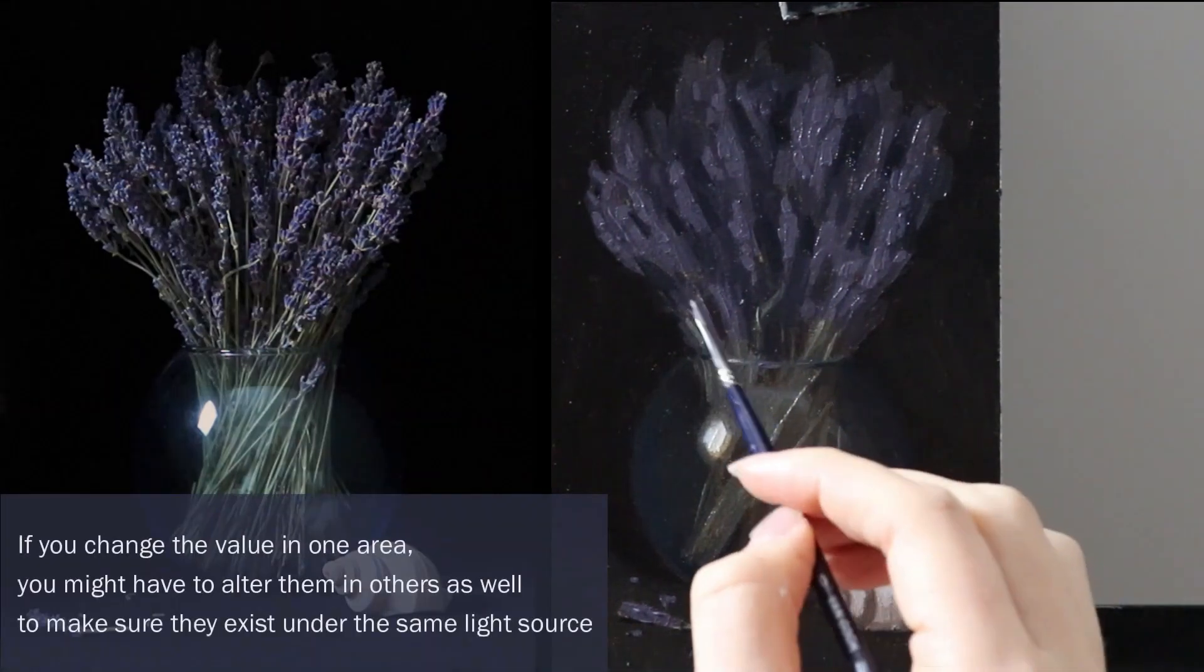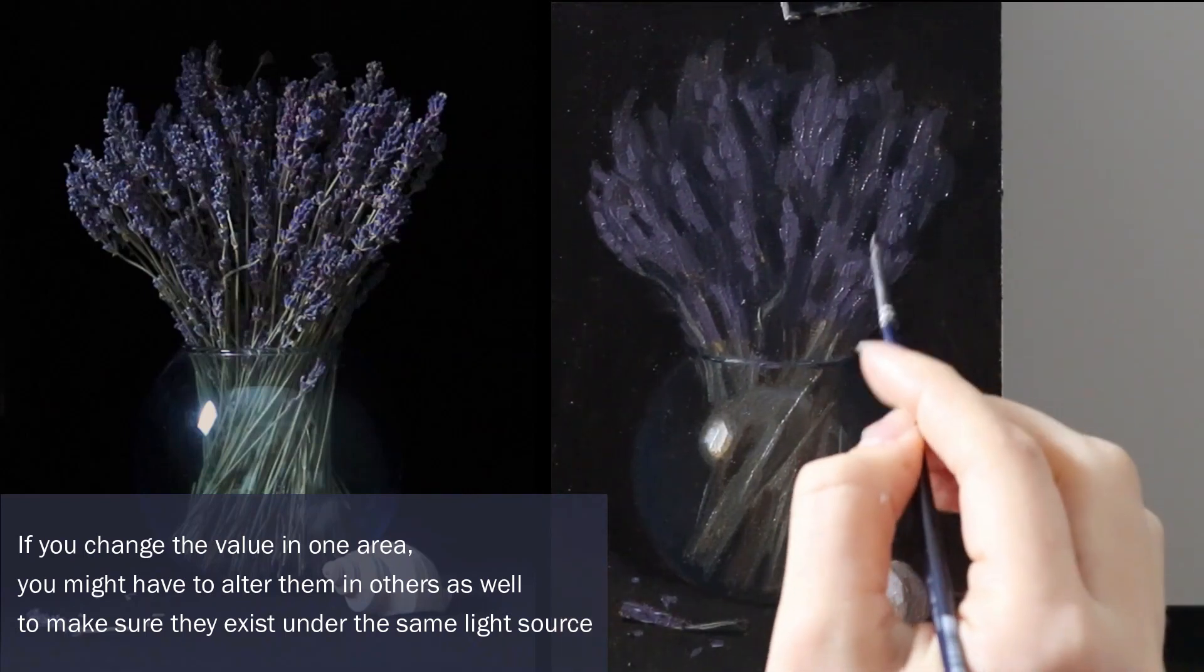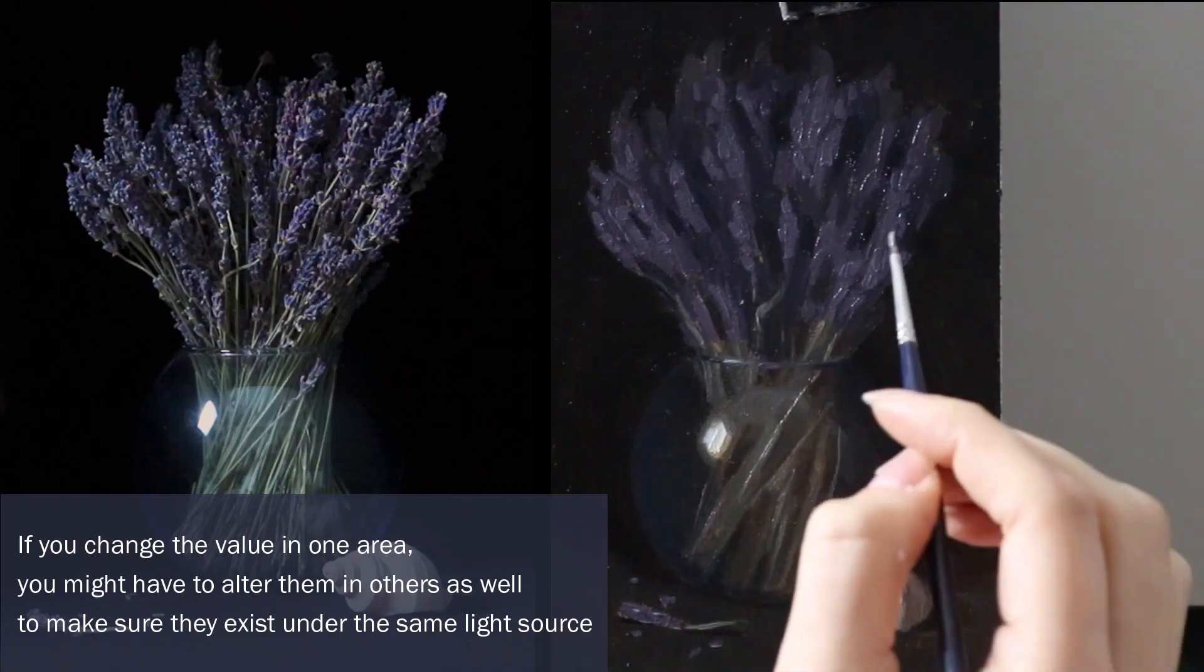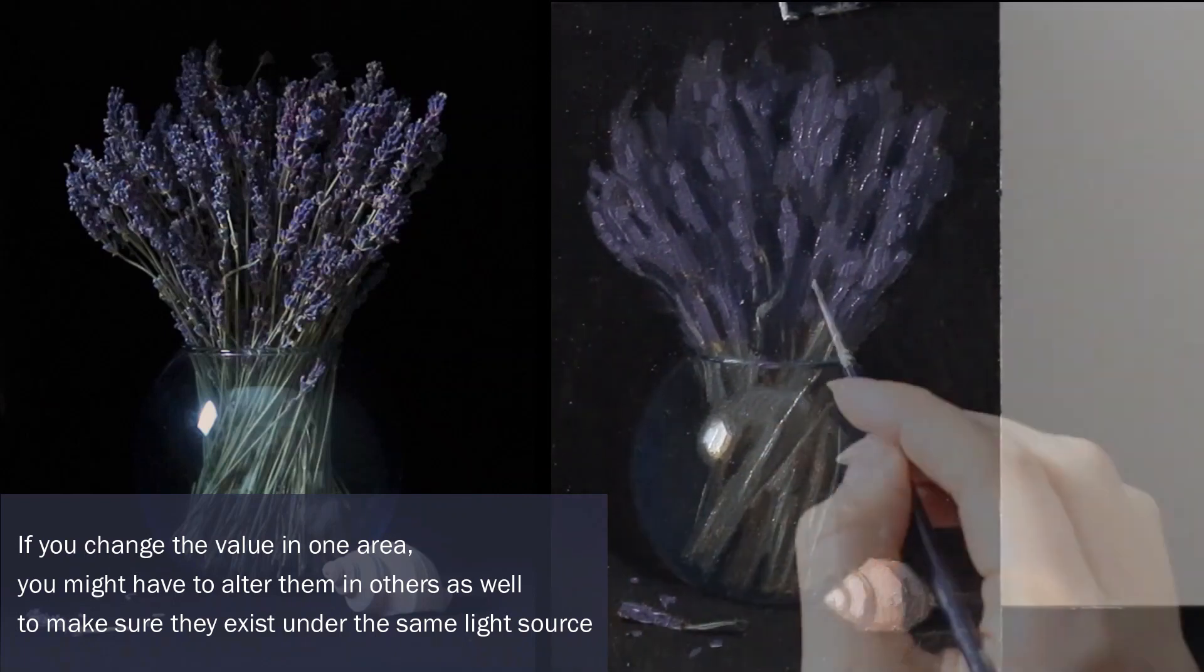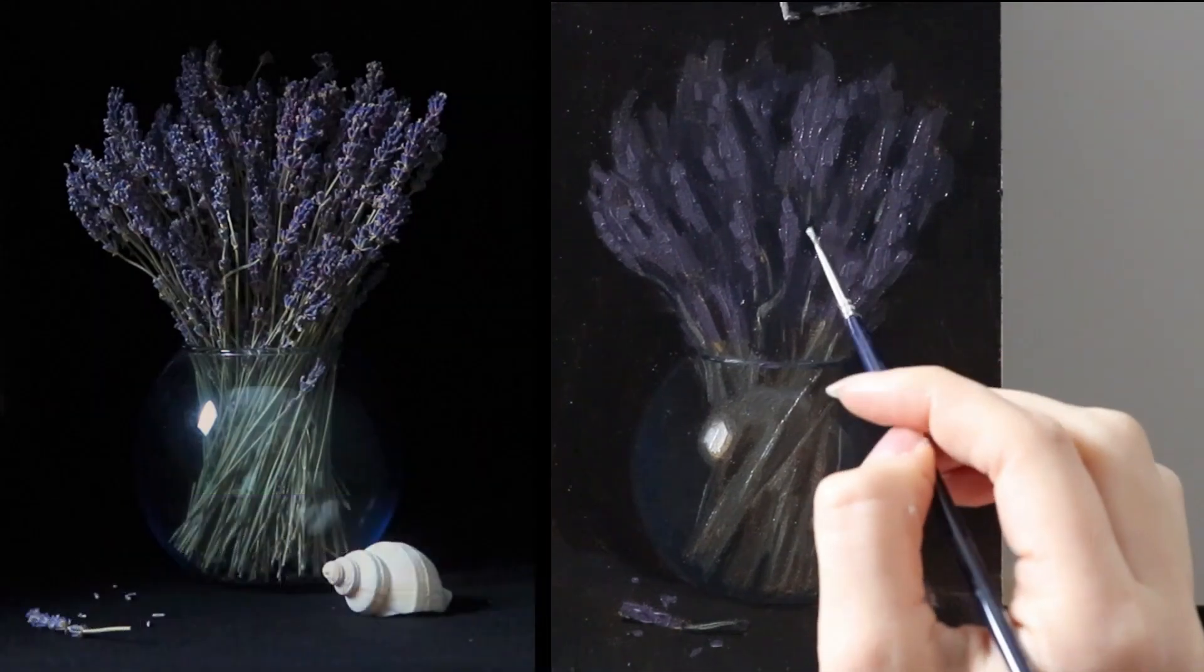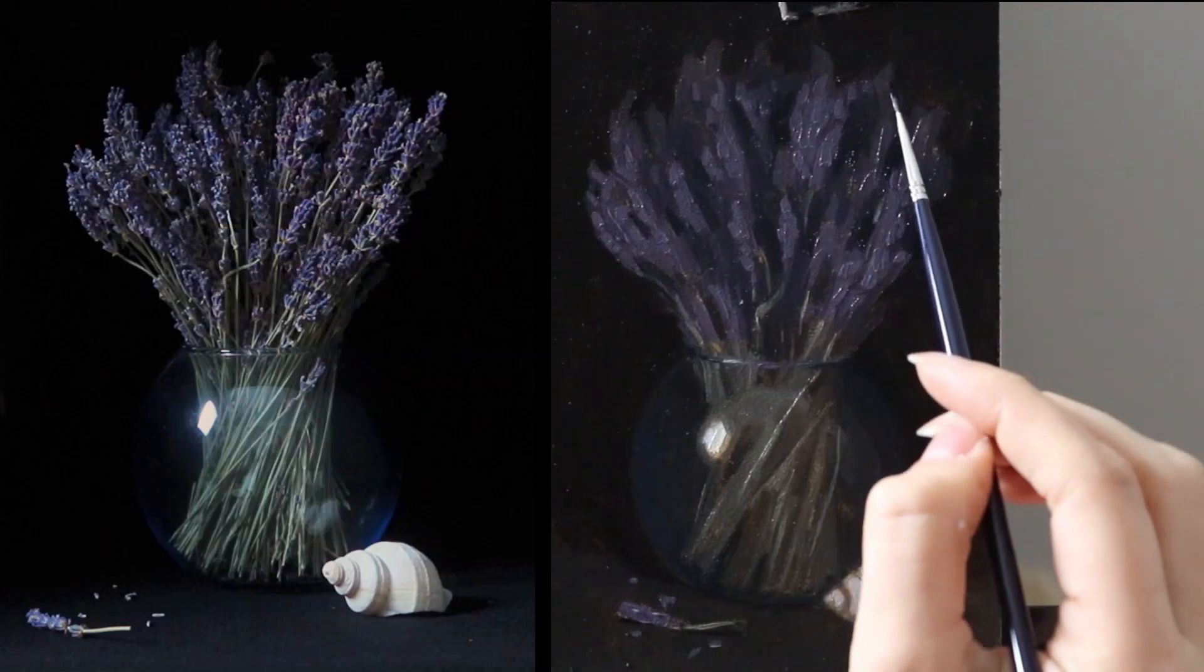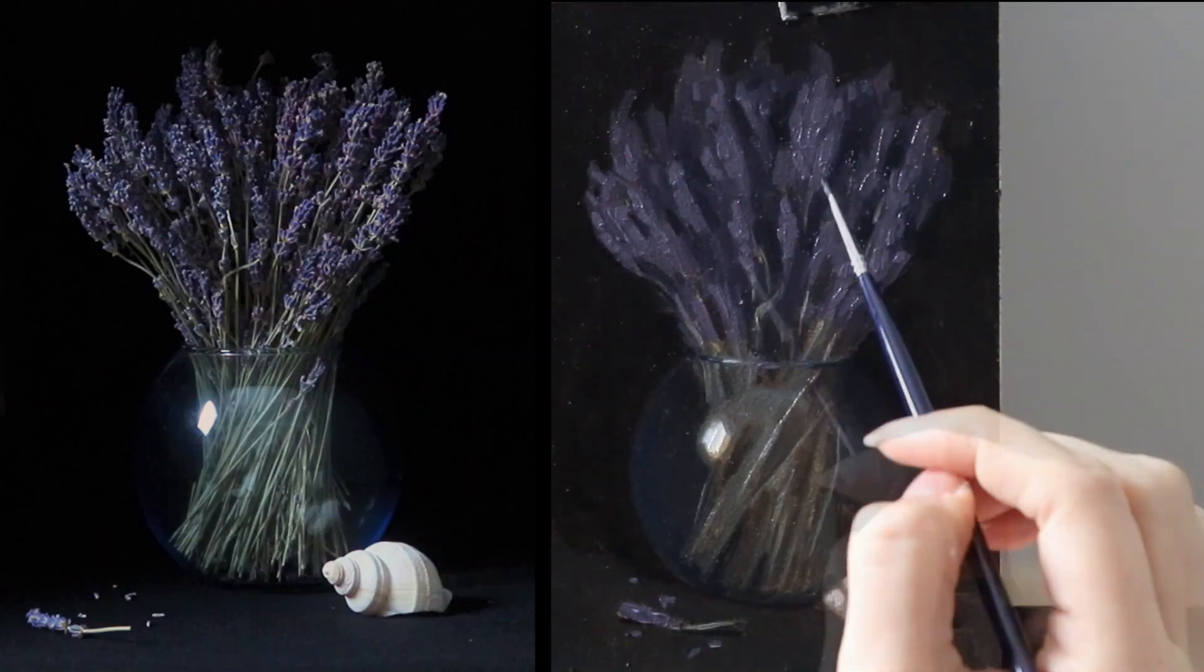I also add in some of the brighter stems in between the now brighter lavender flowers to make sure one gets the sense that everything happening in this area is hit by the same type of light source. Then I add in more of the darker notes as well to get more the sense of the different groupings of the flower.